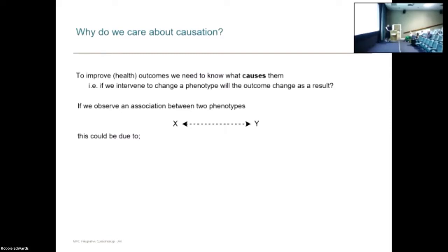I'm going to start by stepping away from genetics for a slide and talking more about epidemiology. Within epidemiology we really want to try and understand what causes different health outcomes. We can see what's associated with things by looking at associations between different traits, but if we really want to act on particular traits to try and improve health outcomes for people, we need to know what causes them.